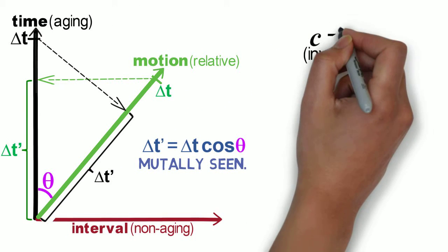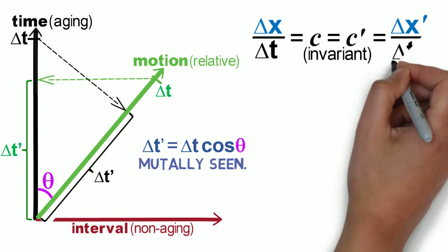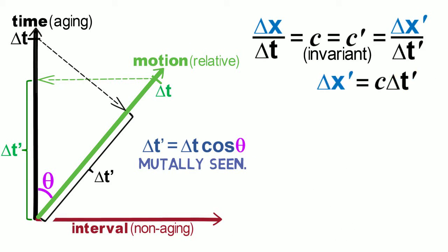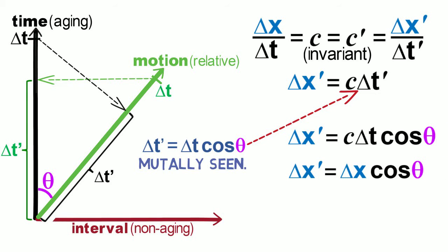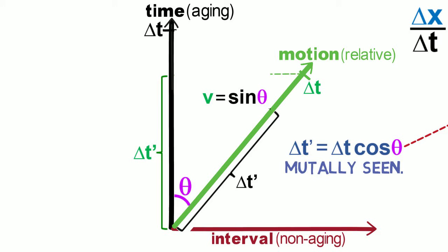And length contraction is just a factor of C away. Being invariant, C equals C prime. And we find path traversed per unit of aging in one frame is the same as that of any other. Length and aging vary together. Velocity, as a fraction of C, is a function of worldline angle given by sine theta. It's the degree to which a worldline is light-like.